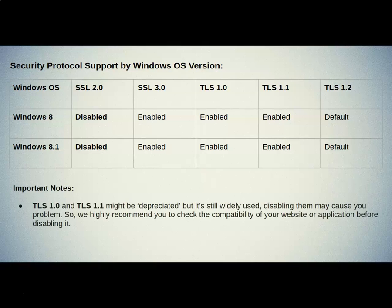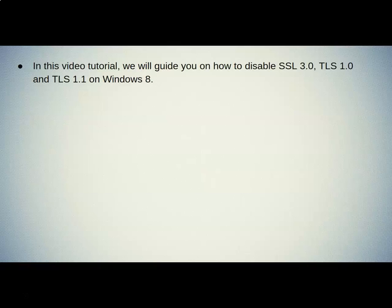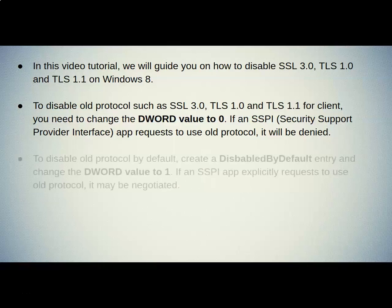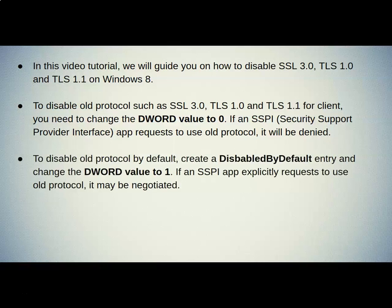Important Notes: TLS 1.0 and TLS 1.1 might be deprecated but are still widely used. Disabling them may cause you problems. So, we highly recommend you check the compatibility of your website or application before disabling them. In this video tutorial, we will guide you on how to disable SSL 3.0, TLS 1.0, and TLS 1.1 on Windows 8. To disable old protocols such as SSL 3.0, TLS 1.0, and TLS 1.1 for clients, you need to change the DWORD value to 0. If an SSPI (Security Support Provider Interface) app requests to use an old protocol, it will be denied. To disable old protocols by default, create a 'DisabledByDefault' entry and change the DWORD value to 1. If an SSPI app explicitly requests to use an old protocol, it may be negotiated.